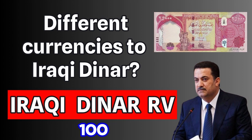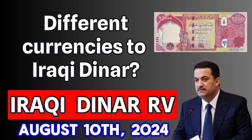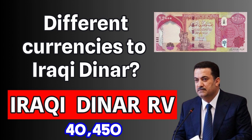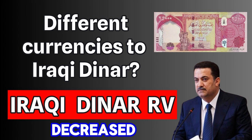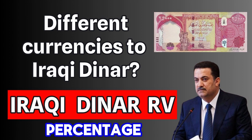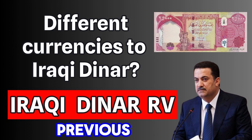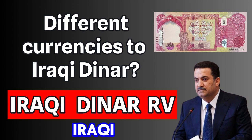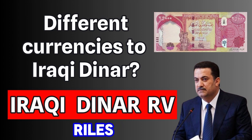The price of 100 Iraqi dinar today, Saturday 10 August 2024, is in the 40,450 riyal market, which has decreased 350 riyals, 0.86%, compared to the previous day. Each unit of 100 Iraqi dinar is sold at the price of 40,800 riyals.